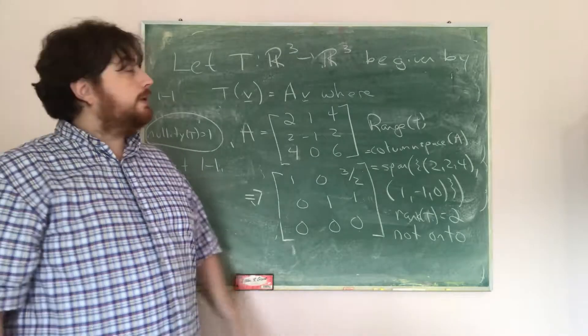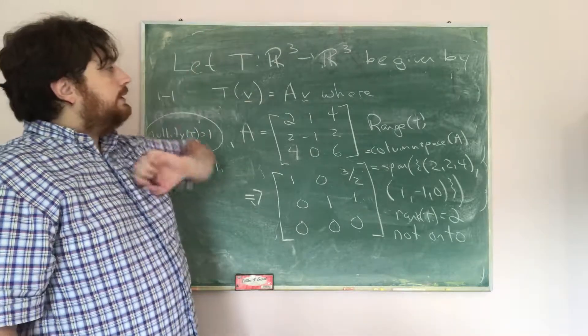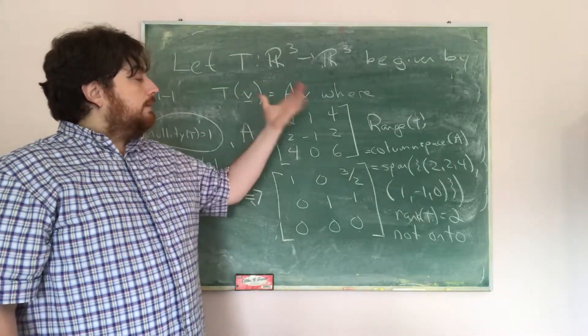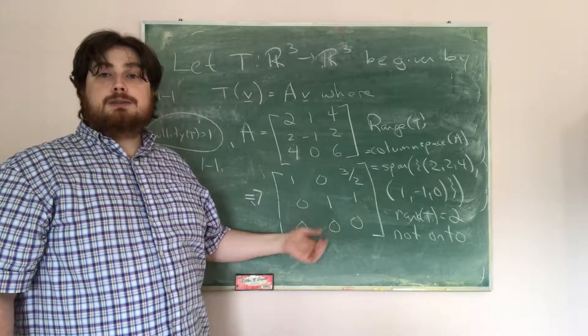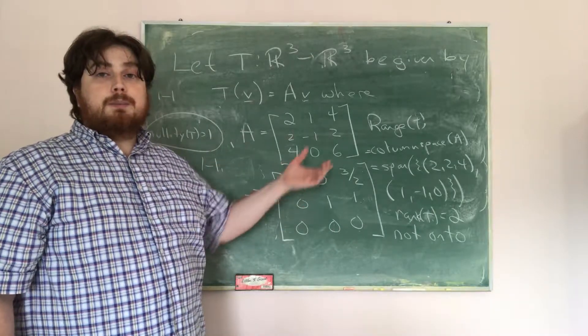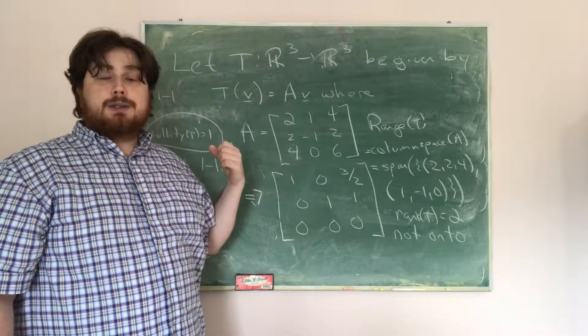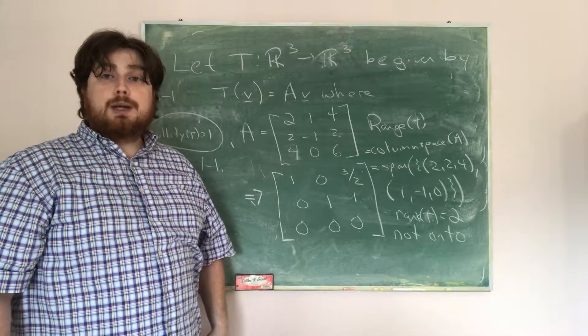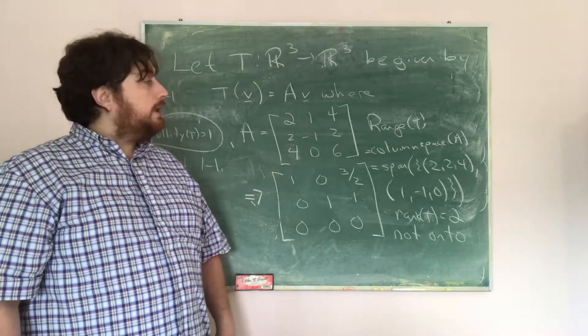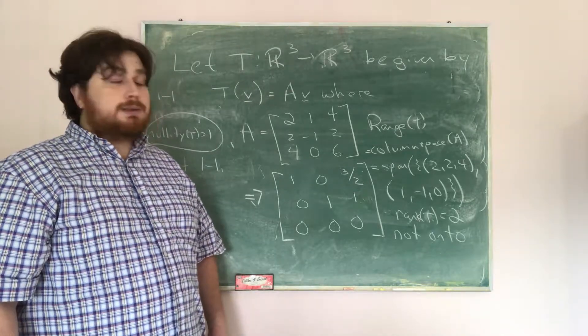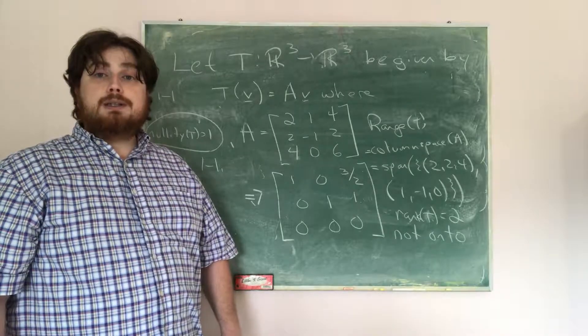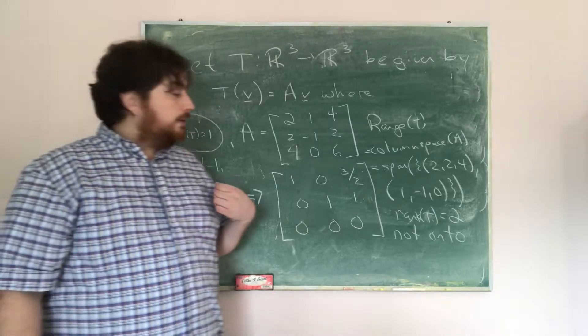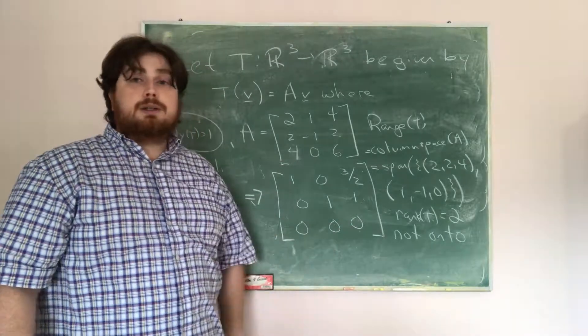So to recap that, what we realized is that if we have a linear transformation given by matrix multiplication, we could find the kernel by finding the null space of the matrix, and then the nullity of the matrix is going to be the nullity of the transformation. We could find the range by finding the column space of the matrix, and so the rank of the transformation is just going to be the rank of the matrix. And we're going to say that this is going to be 1 to 1 if the nullity is 0, and it's going to be onto if the rank is equal to the number of rows.